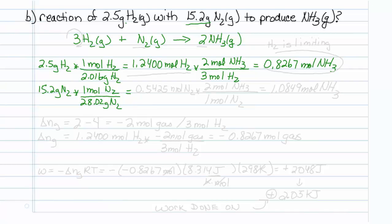Once again, we'll figure what that is in terms of product. There is 1 mole of nitrogen for every 2 moles of NH3. So multiplying this by 2 gives us 1.0849 moles of NH3.